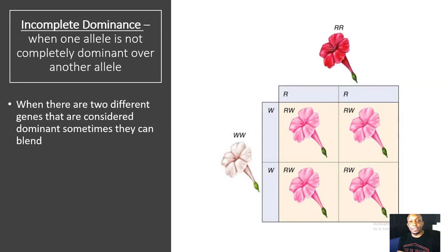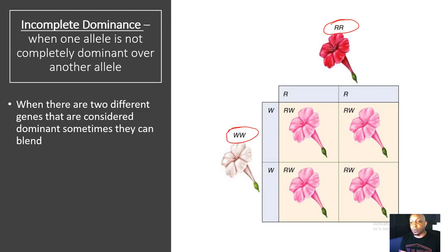Let's take a look at incomplete dominance. This is when one allele is not completely dominant over another allele. When there are two different genes that are considered dominant, sometimes they can blend. So we look at this homozygous dominant red flower crossed with this homozygous dominant white flower — the resulting offspring are neither red nor white, but actually a blend, producing pink flowers. Neither allele was dominant over the other; they blended together to create these pink flowers.